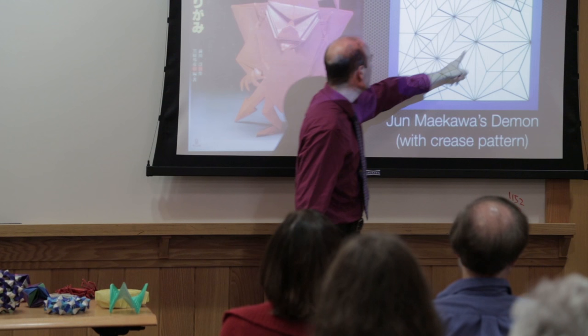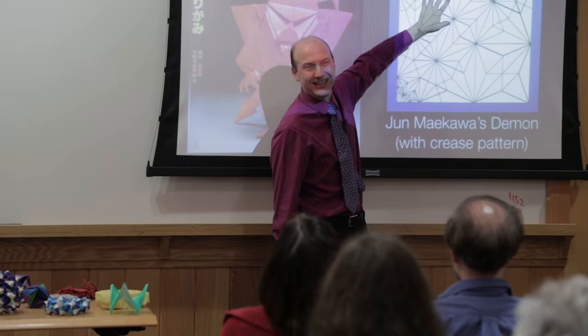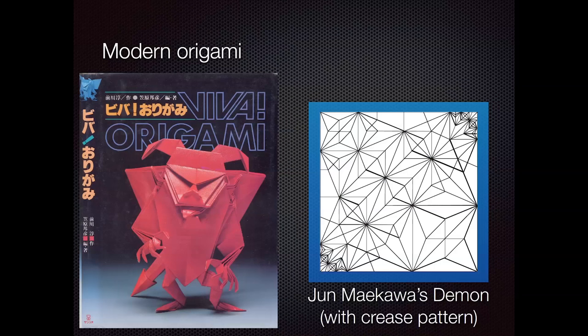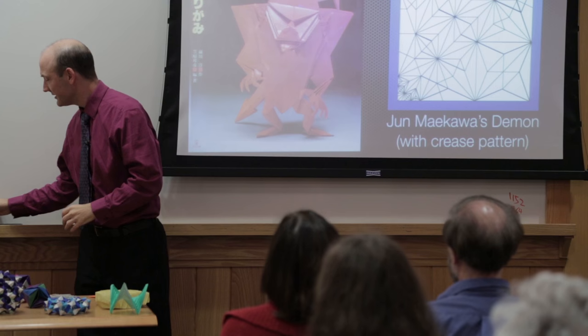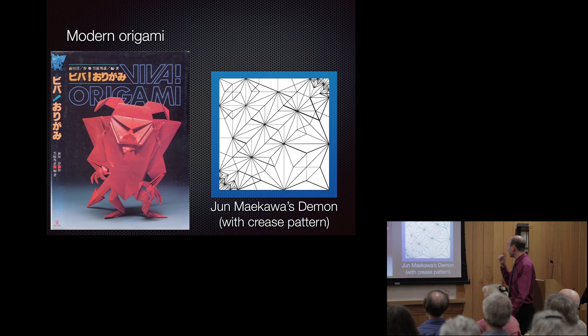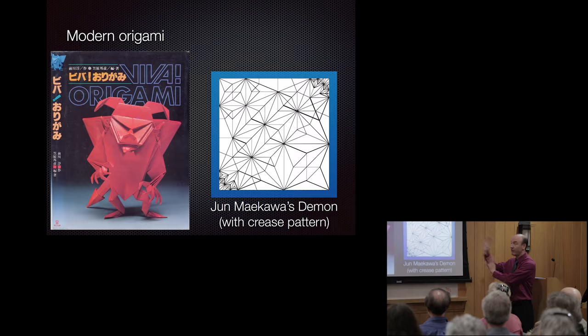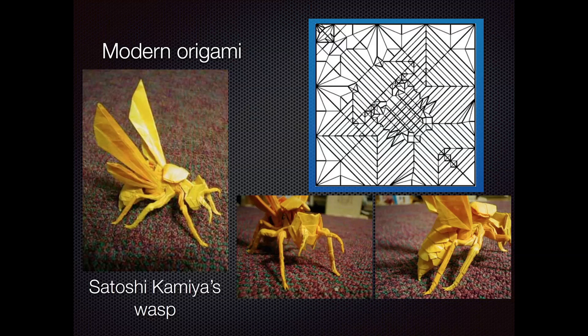About three-quarters of the paper in Maekawa's Devil is in the head, because the head has so much detail — a chin, tongue, nose, eyes, horns, and ears. It's rather top-heavy if you actually hold it. This was folded from a two-foot square, and it collapses down a lot. Whereas the body doesn't need as much paper.